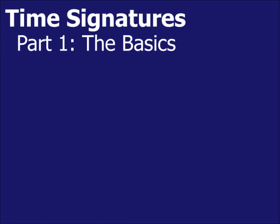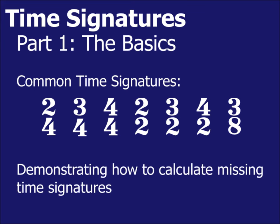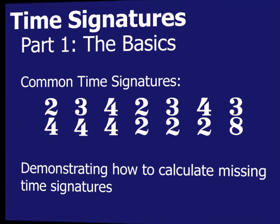In this series of videos, I'll be explaining what time signatures are and how they work. In this video, part one, I'll be explaining the more common types of time signatures, such as those listed here, and I'll be demonstrating how to calculate missing time signatures from a passage of music. It's really important that you understand note names and their values before looking at this video. If you're not sure of the names of notes, have a look at my video, note names and their values.